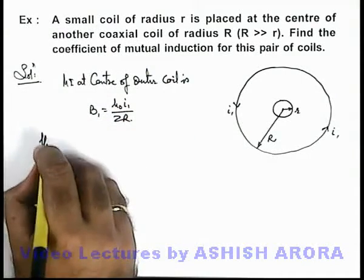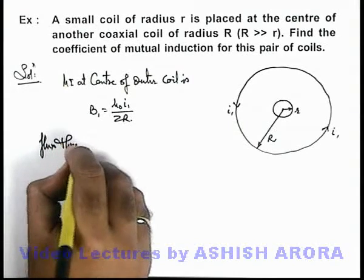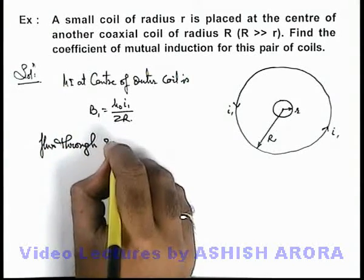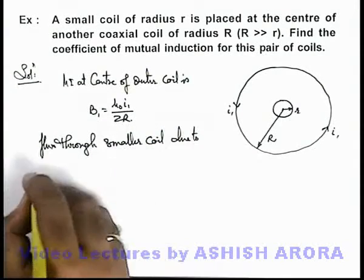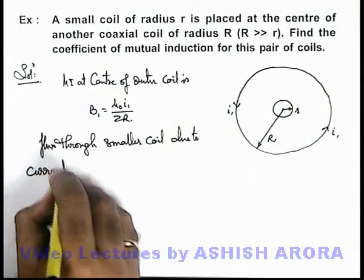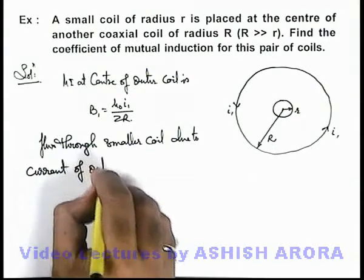If we calculate the flux through smaller coil due to current of outer coil is